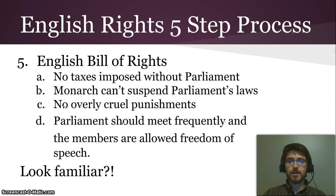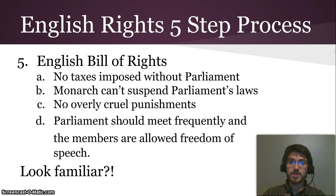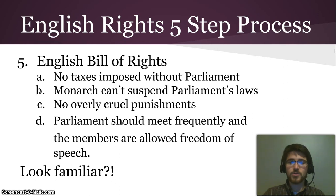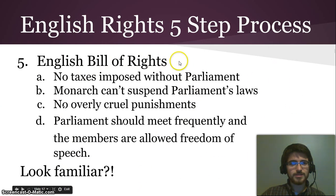William and Mary accepted the English Bill of Rights, which Parliament passed. It stated that no taxes can be imposed without Parliament, which had been an issue with kings and queens who just set up taxes as they pleased. Monarchs can't suspend Parliament's laws. No overly cruel punishments, like drawing and quartering. Parliament should meet frequently and members are allowed freedom of speech — because previously kings had dissolved Parliament when they didn't like what was being said, and had imprisoned or killed people for disagreeing. Doesn't that look a little familiar — maybe like what ended up in the United States Bill of Rights and the First Amendments to the Constitution?